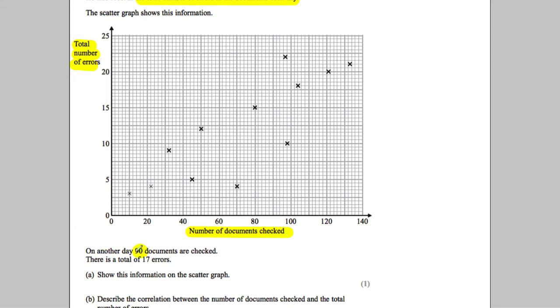On another day, 90 documents are checked with 17 errors. Show this on the graph. So you want to go across to 90 documents being checked, which is along here, and up to 17 errors. Be very careful with the scale. Each little square is not one, because if it was it would be 11, 12, 13, 14, 15, whereas 15 is here. Each double square is one.